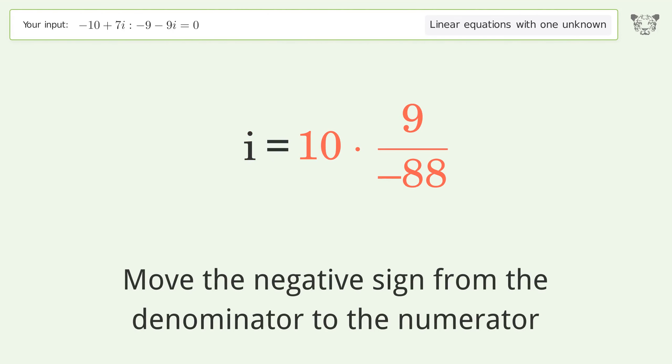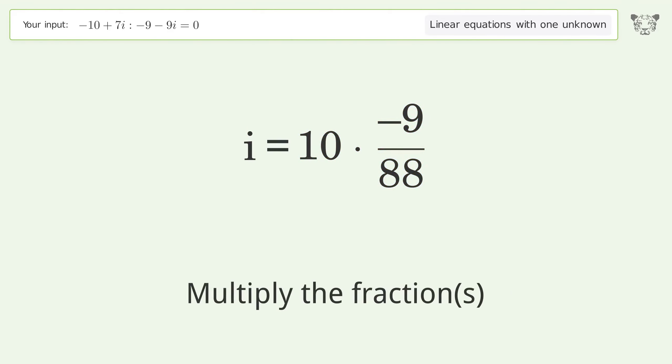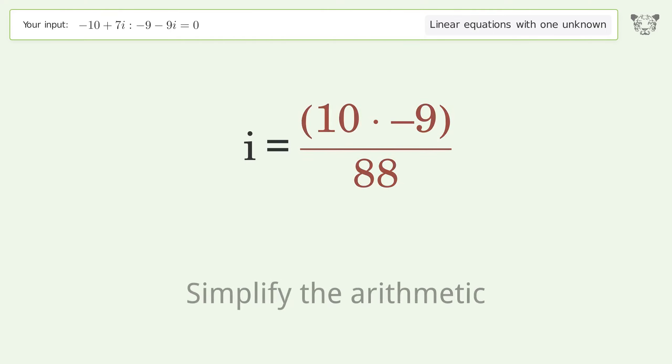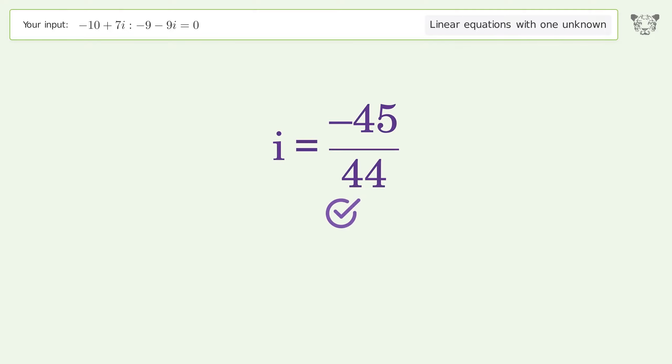Move the negative sign from the denominator to the numerator. Multiply the fractions. Simplify the arithmetic. And so the final result is i equals negative 45 over 44.